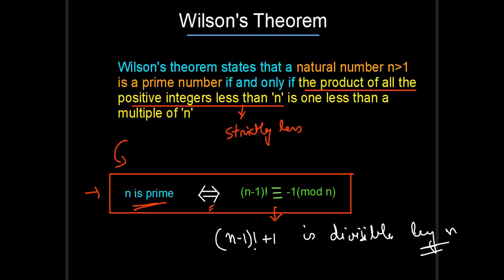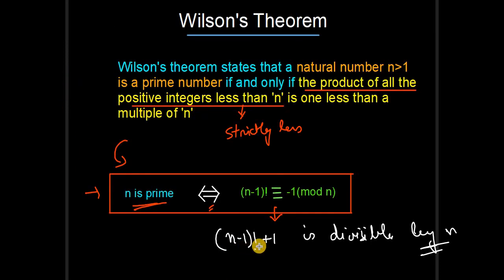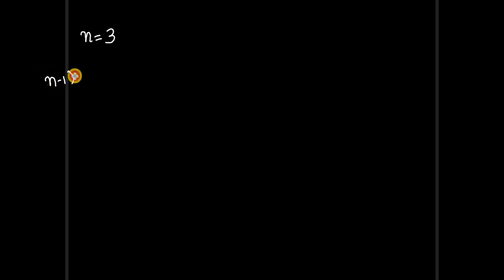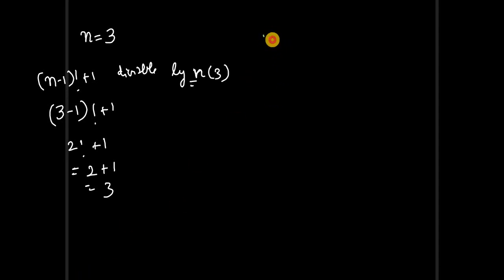Now we will check whether Wilson's theorem is satisfied for different prime numbers. Moving on to our next slide, we check first with n equals 3. For n equals 3, (n-1)! + 1 should be divisible by n, which is 3. So: (3-1)! + 1 = 2! + 1 = 2 + 1 = 3, and 3 is divisible by 3. So Wilson's theorem is satisfied for n equals 3.